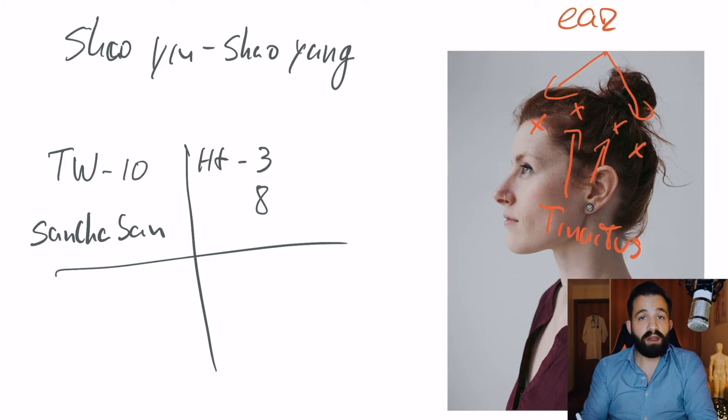Going now towards the lower limbs, we go for kidney, the Shaoyang of the leg and we use Asha points around kidney 3 and kidney 10.